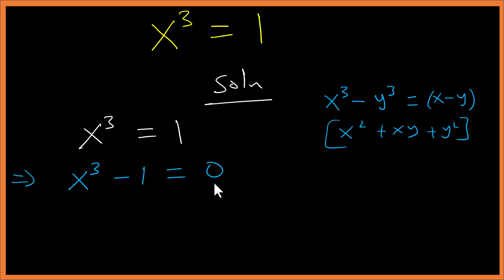So with this we have x³ - 1³ = 0. Now from here we can write this as one cubed.